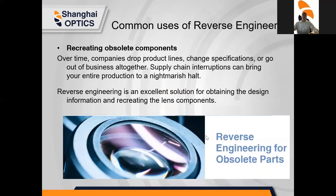Some common uses for reverse engineering. Number one: recreating obsolete components. Over time, companies can drop their product lines, change their specifications, or go out of business altogether. Supply chain interruptions can bring your production to a complete halt. So reverse engineering is an excellent solution for obtaining the design information and recreating lens components.